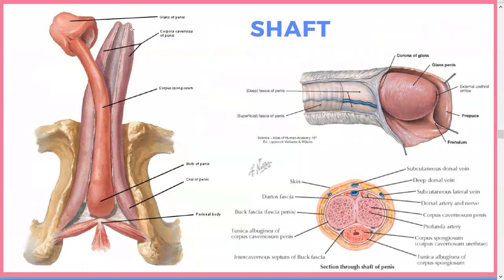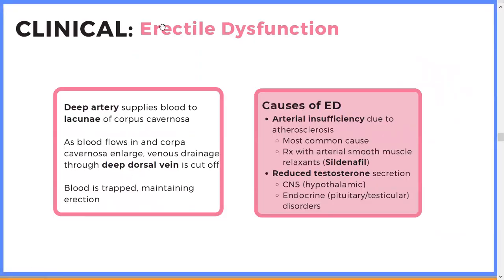The anatomy of the erectile structures: this diagram shows the neurovascular supply of the shaft. Important structures include the deep artery, the corpora cavernosa, the glans, the corpus spongiosum, the perineal body, and the prepuce. Erectile dysfunction can occur due to arterial insufficiency — atherosclerosis, the same thing that causes angina, can cause ED because blood doesn't get where it needs to.